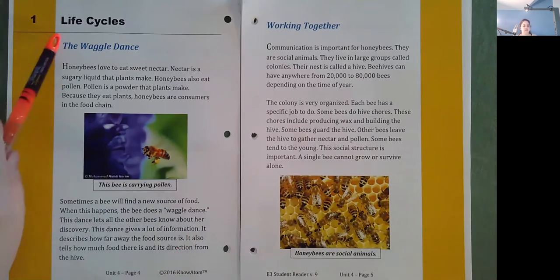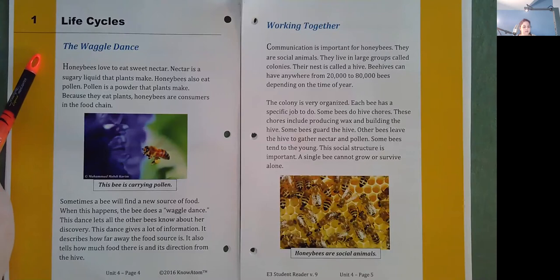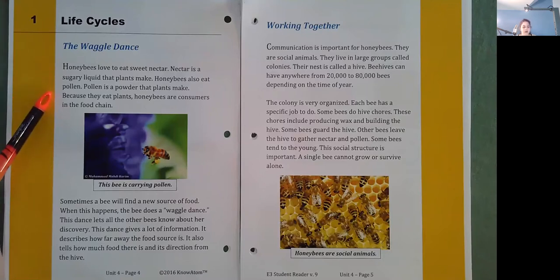Life Cycles, the waggle dance. Honeybees love to eat sweet nectar. Nectar is a sugary liquid that plants make. Honeybees also eat pollen. Pollen is a powder that plants make. Because they eat plants, honeybees are consumers in the food chain.